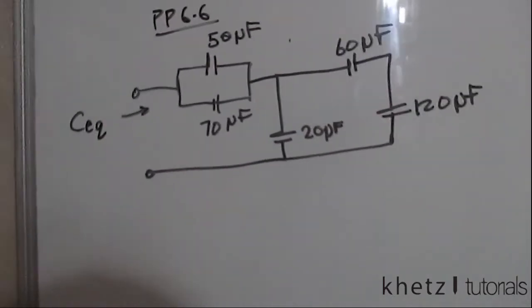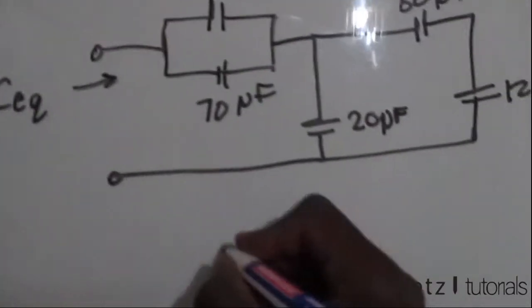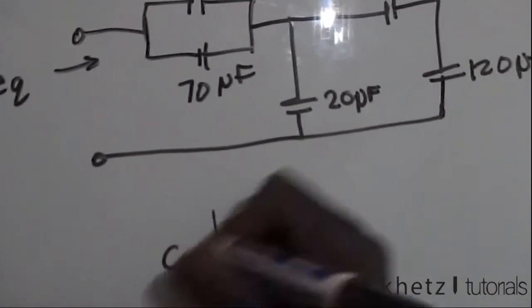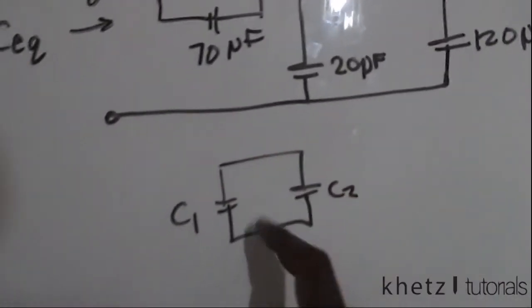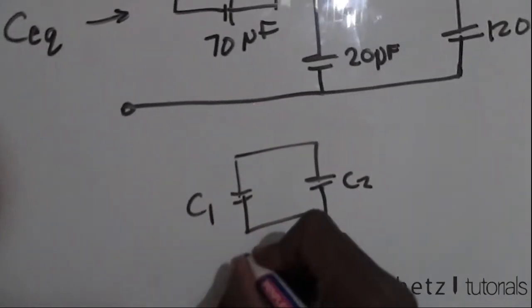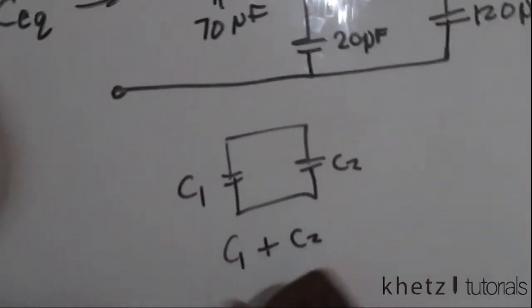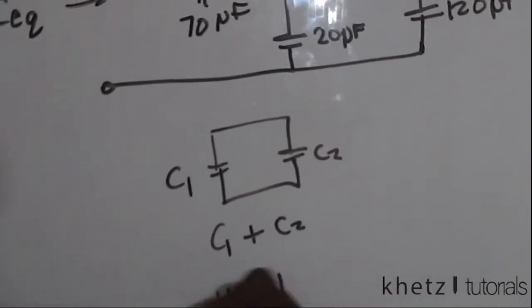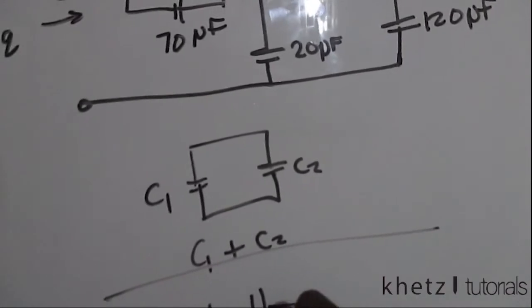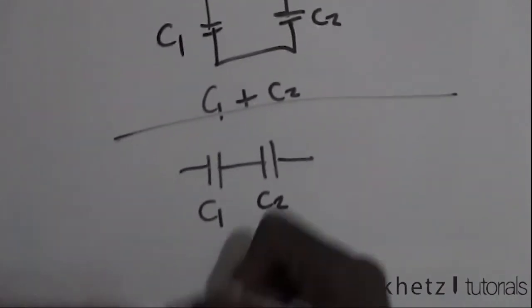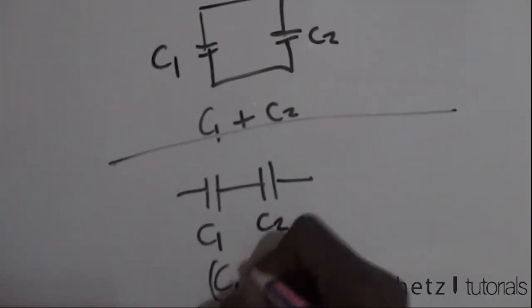So just a quick recap, if you're dealing with parallel capacitors, let's say C1 and C2, what you basically do in this case to find the equivalent, you say C1 plus C2. But if you have capacitors in series, if you have something like this, then you actually apply this formula to find the equivalent.